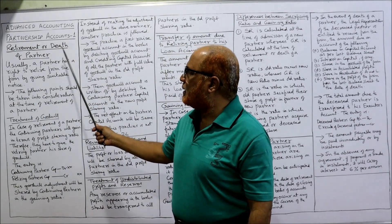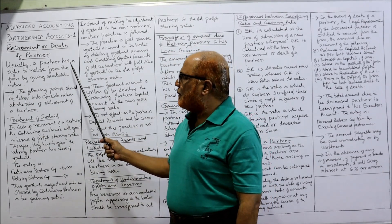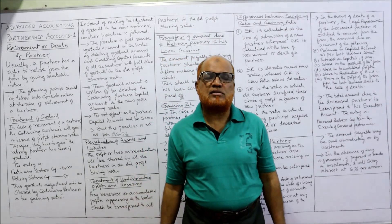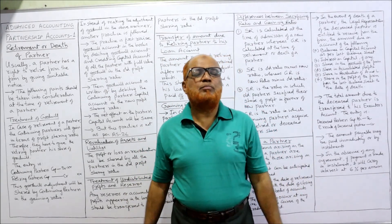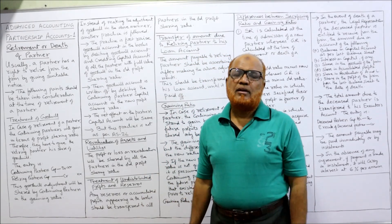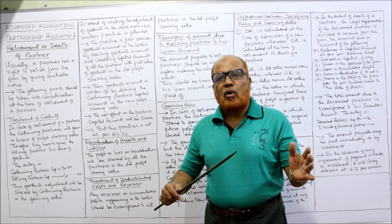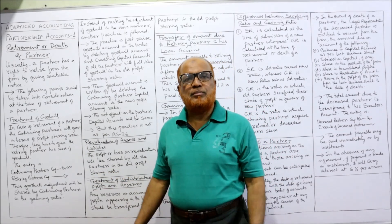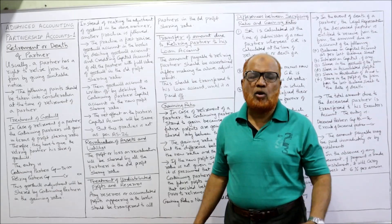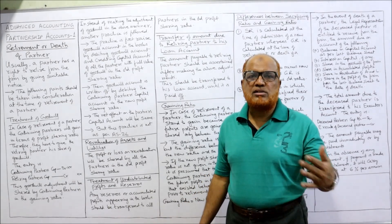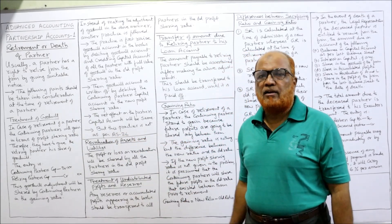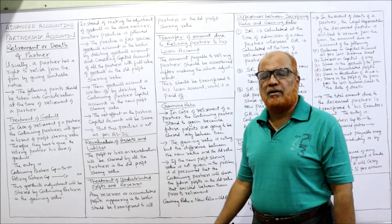Retirement or death of a partner — usually a partner has a right to retire from the firm after giving suitable notice. Normally in every partnership deed, one clause will be given that whenever a partner wants to retire from the firm, they have the right to retire but prior notice should be given. The following points should be taken into consideration on the retirement of a partner.